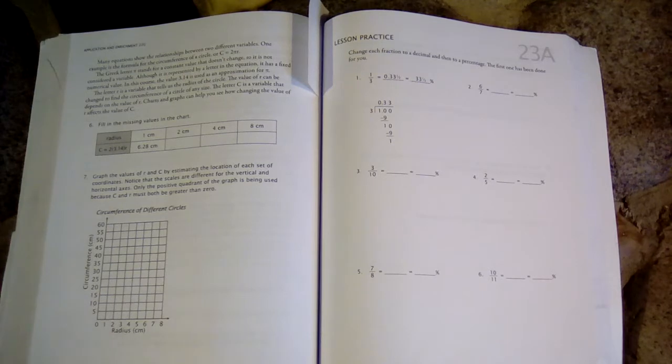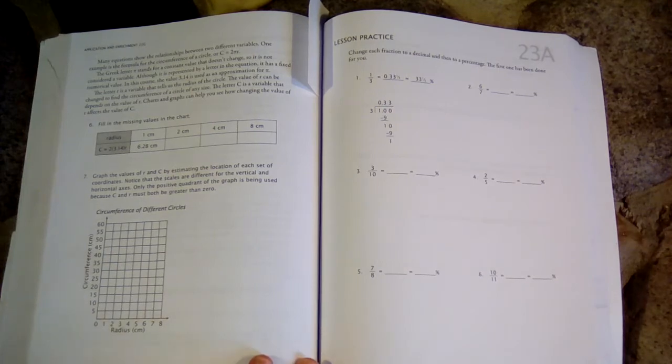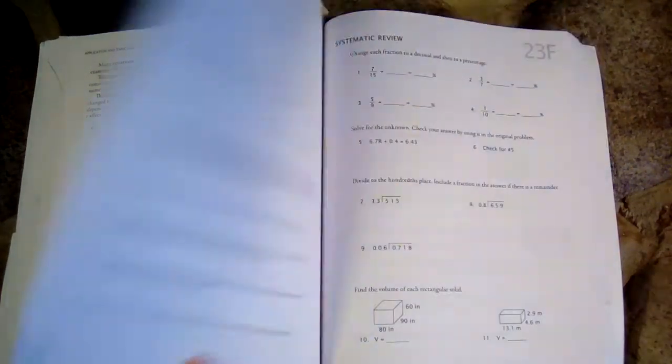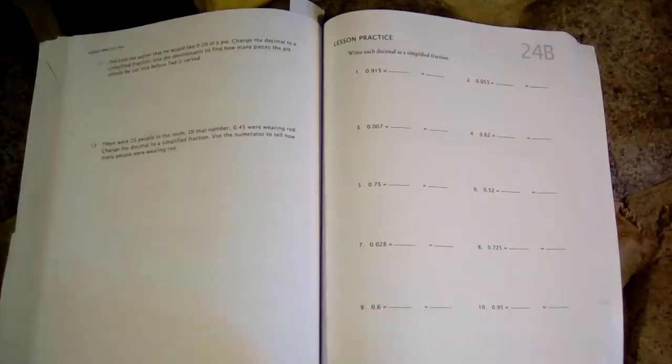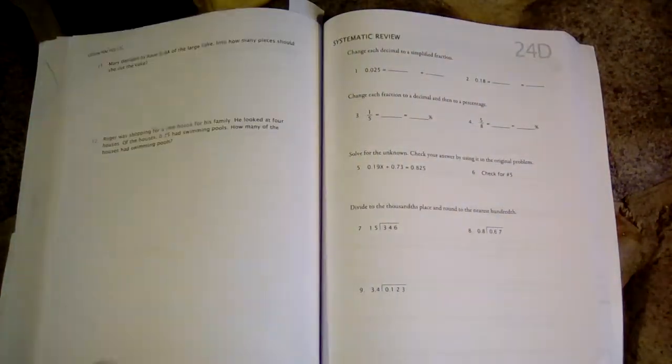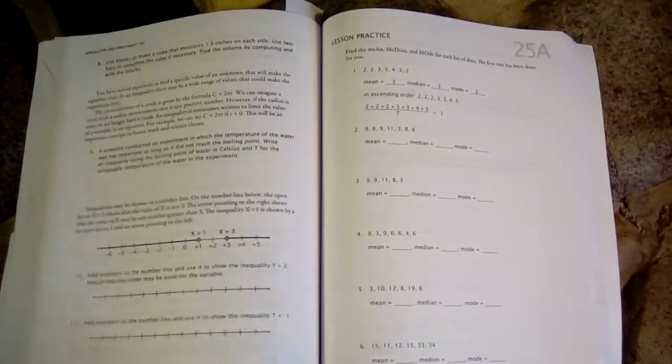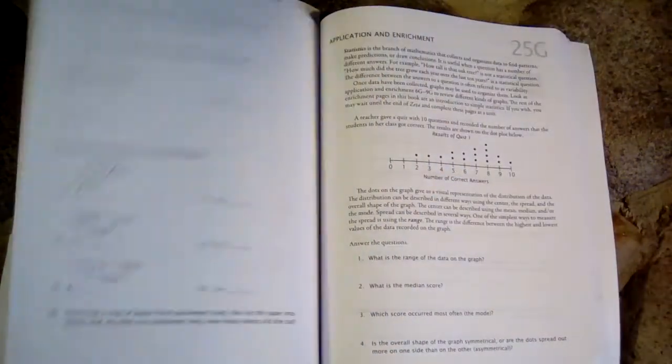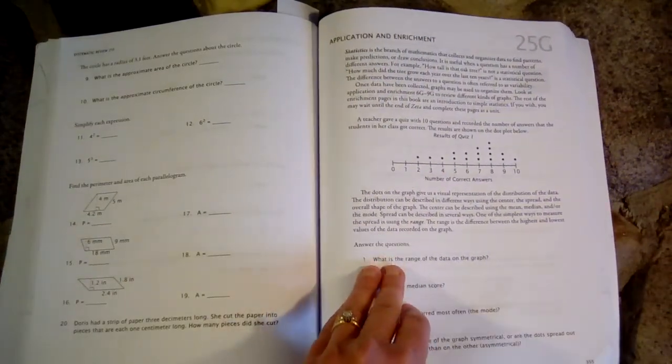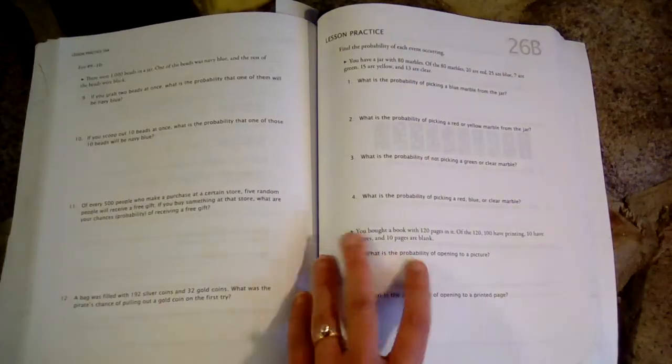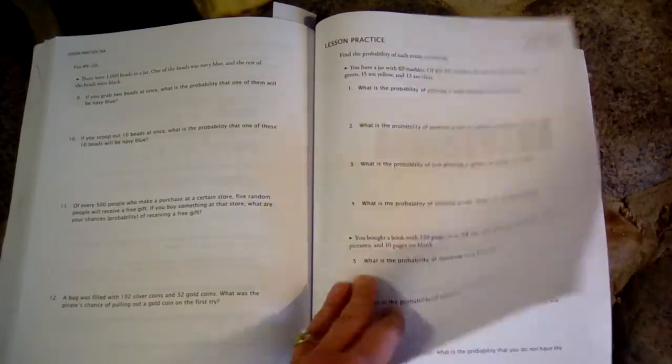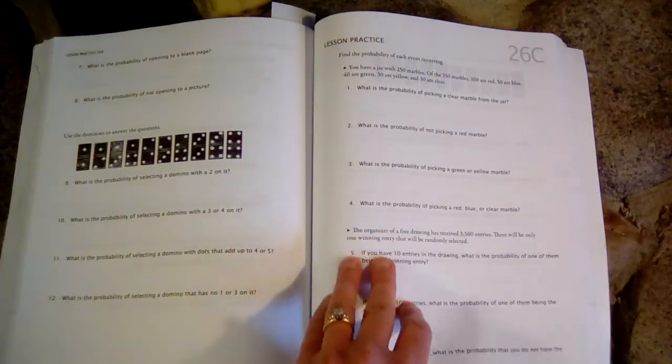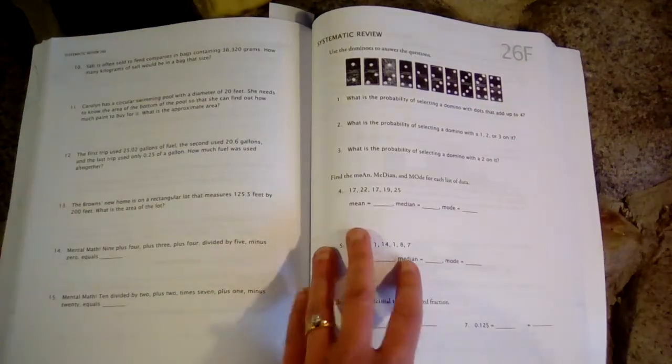When we have used Saxon and teaching textbooks before, every day that we did math, there was a new concept that was explained. So there were five new concepts per week. In this program, there is only one new concept per week. So it goes at a slower pace, and allows the student time to really get it in their minds and learn it well before moving on to the next new idea.